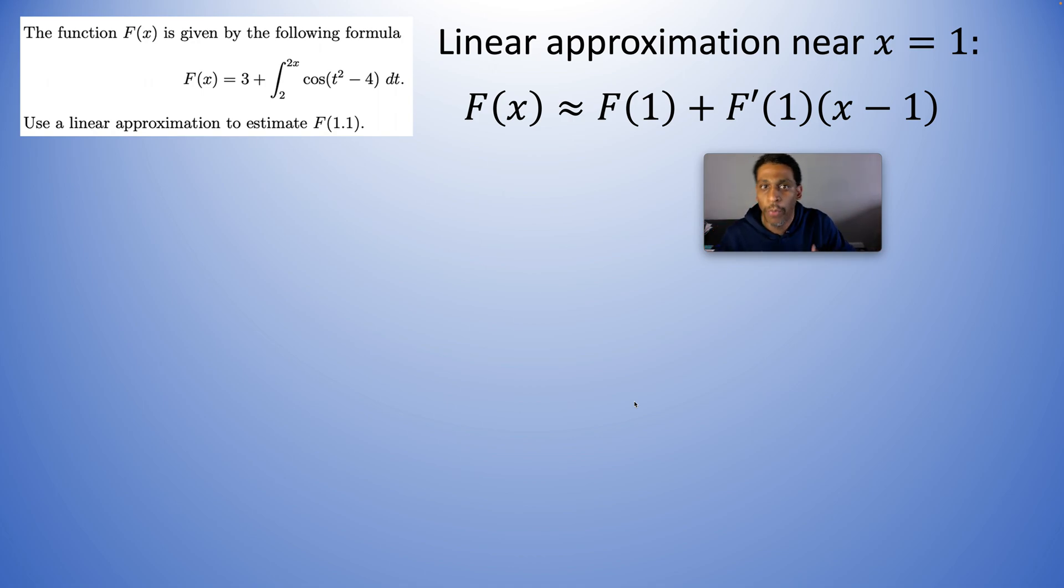The derivative at 1 is your slope and the function at 1 is your y value when your x value is equal to 1. All right. So we're just going to plug in. Let's look at our function.